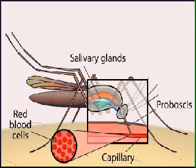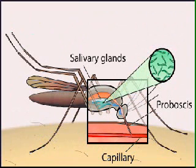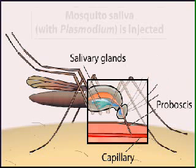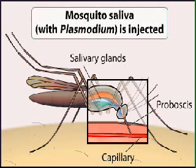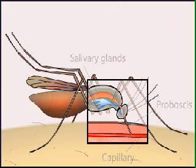An infected female mosquito transfers the parasite to a human when she takes a blood meal. The parasite, in the form of sporozoites, is injected with her saliva, which contains an anticoagulant that promotes a steady blood flow. The circulatory system delivers the sporozoites to their target: the liver.